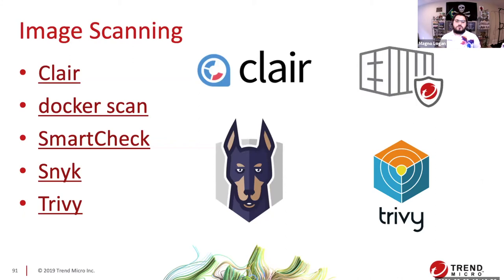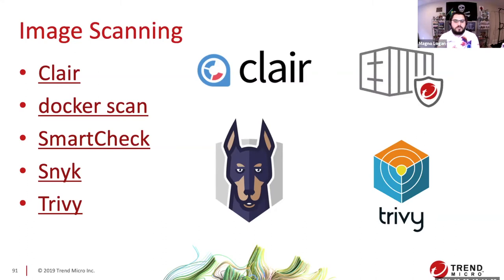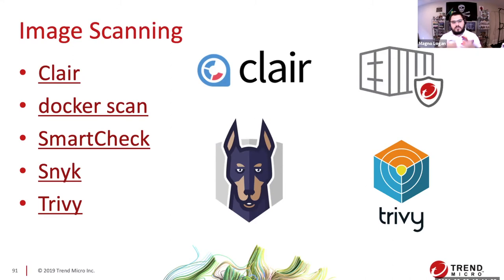Another thing to worry about, especially given supply chain attacks like SolarWinds, is understanding what your containers are running — particularly your base images. You should scan them for vulnerabilities and protect your pipeline against supply chain attacks. There are several tools, either free or open source, that you can use for scanning. Try them out and see what works for you.